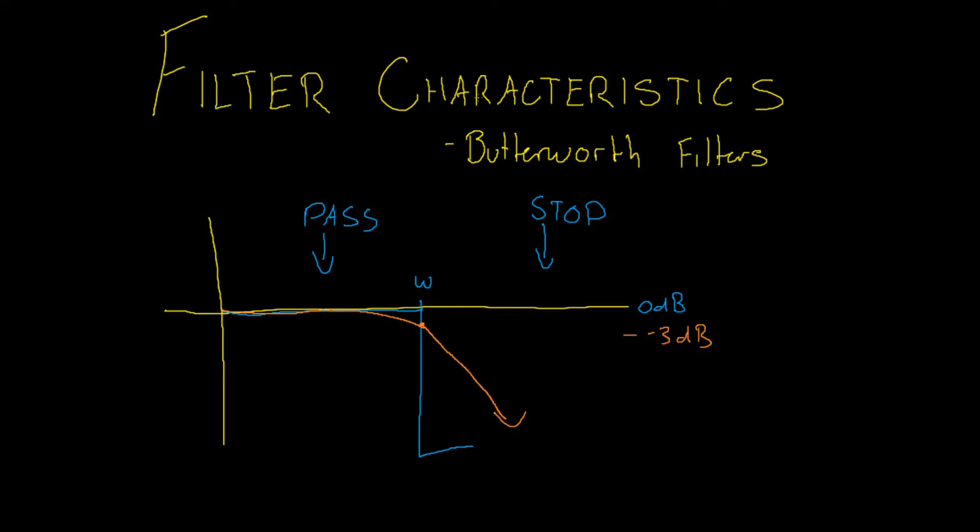For instance, if you had a large amount of frequencies at this point here, omega plus a small value, let's call that alpha, if you had a lot of signals at this point you would need to have a steeper roll-off to try and reduce the amount of signals which get passed through.